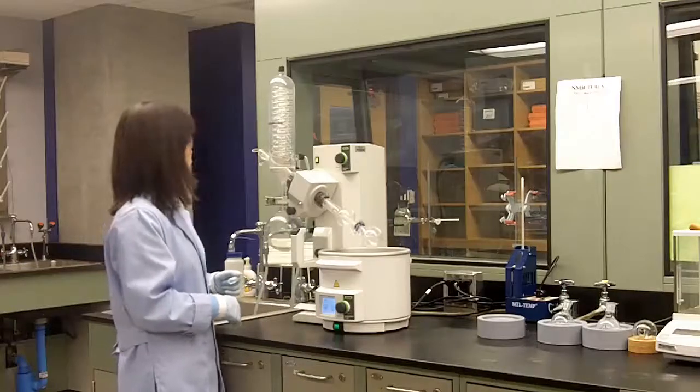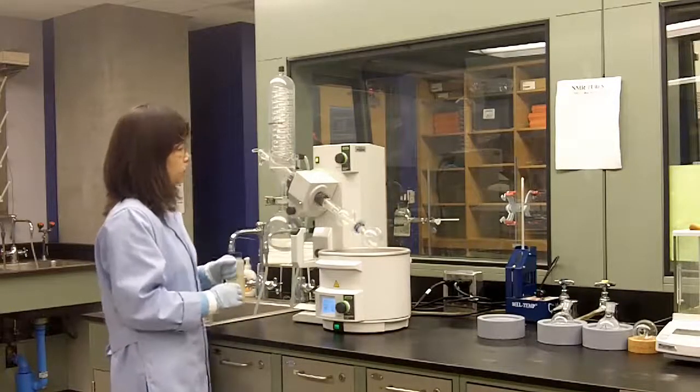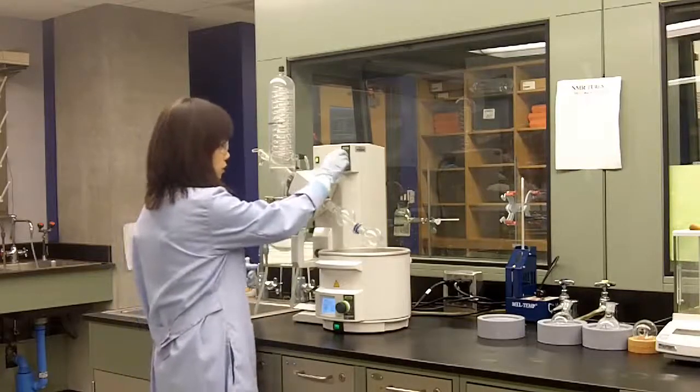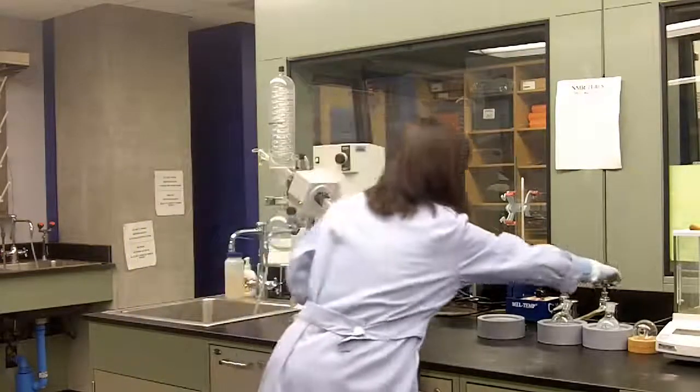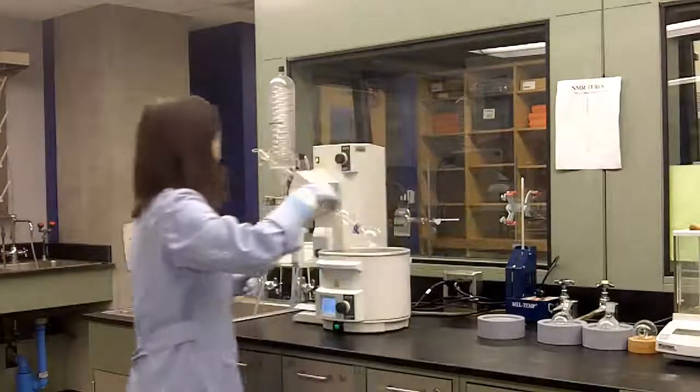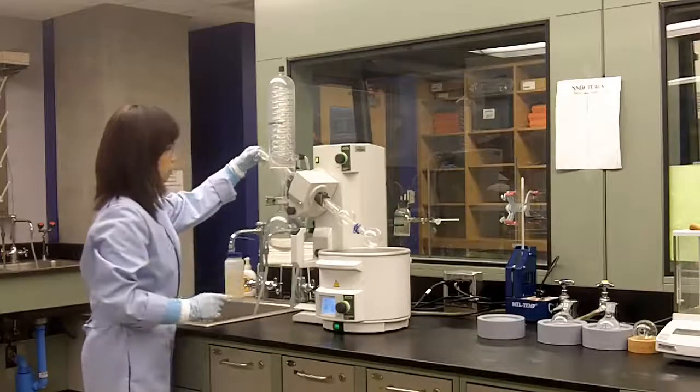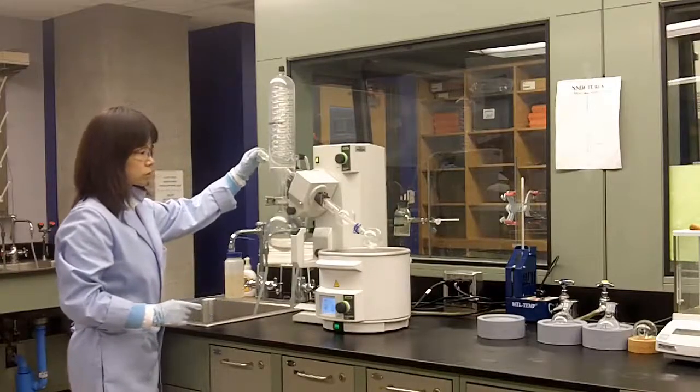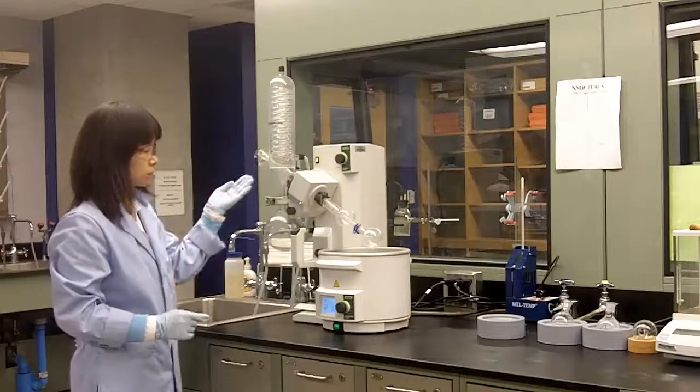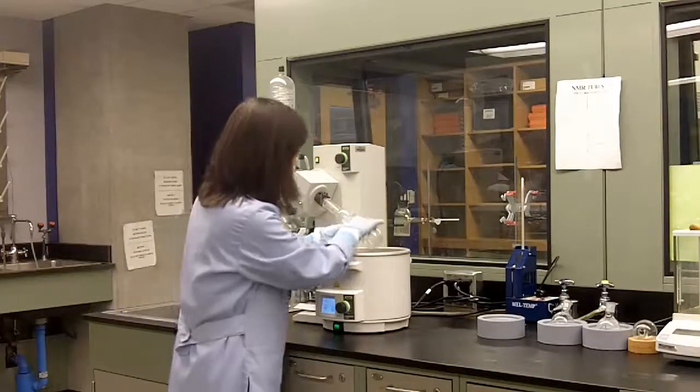Next we need to turn off the rotary evap. To do this, stop the spinning first. Then close the vacuum all the way in the clockwise direction. Then open this glass stopper connected to atmosphere. This will release the vacuum in the system, and then it's safe to remove your flask.